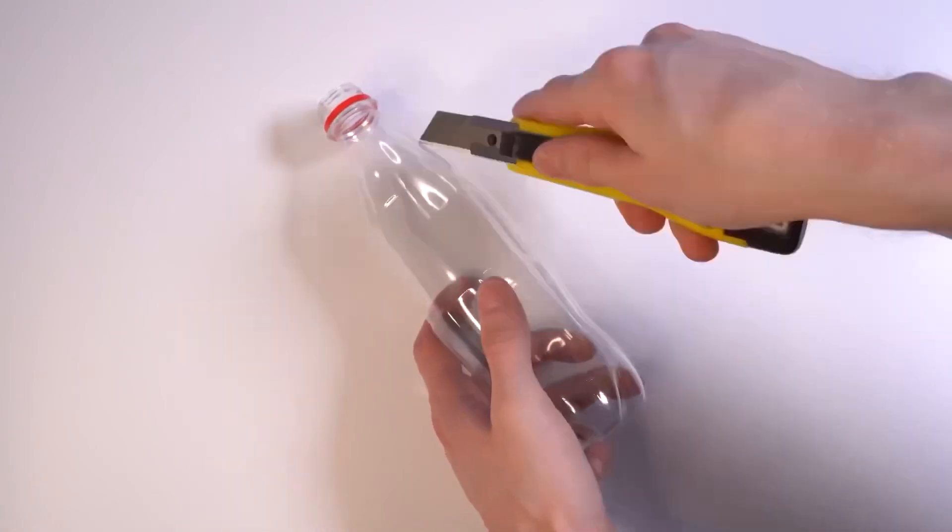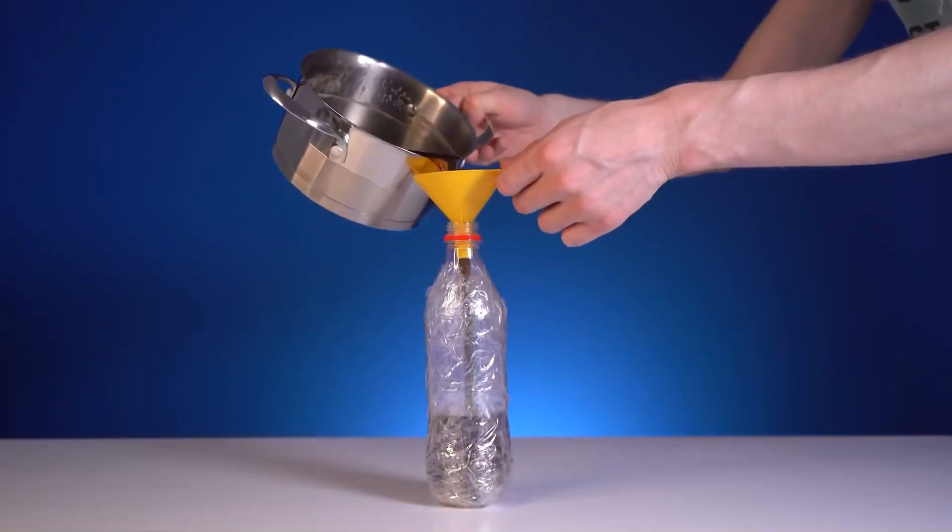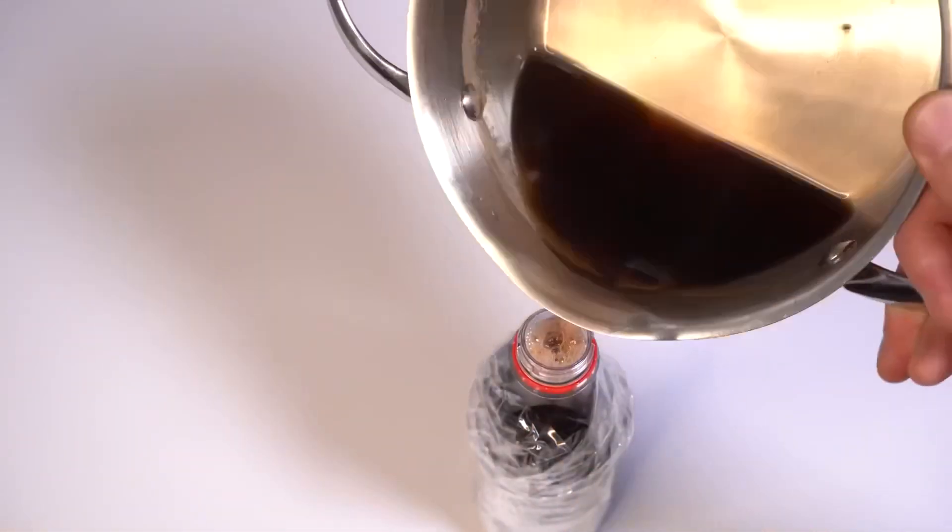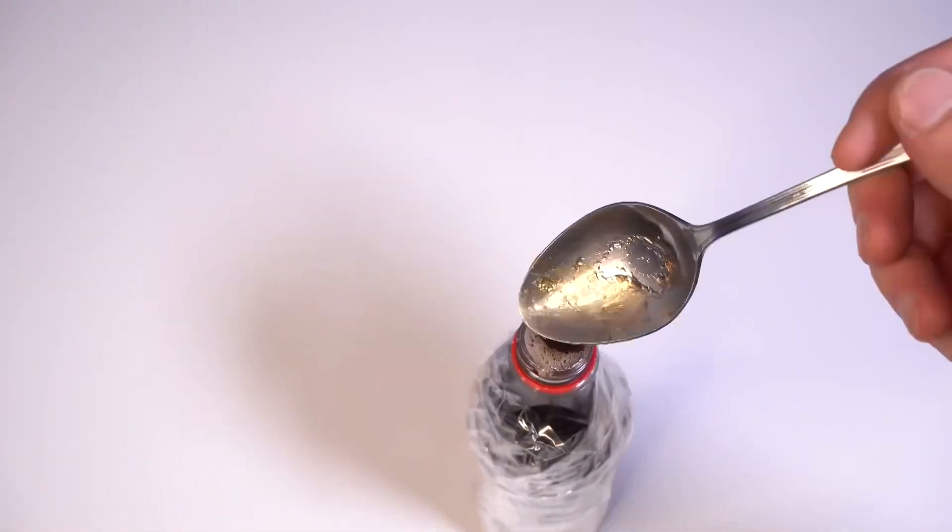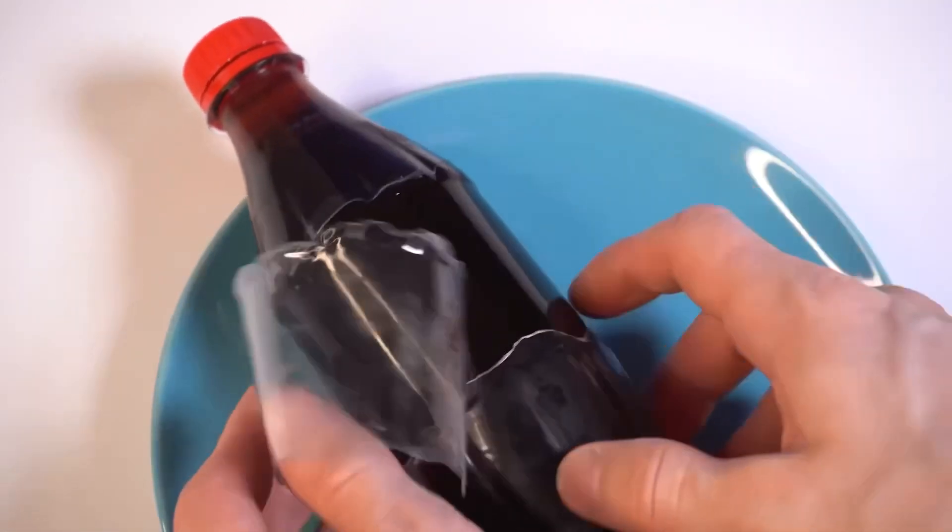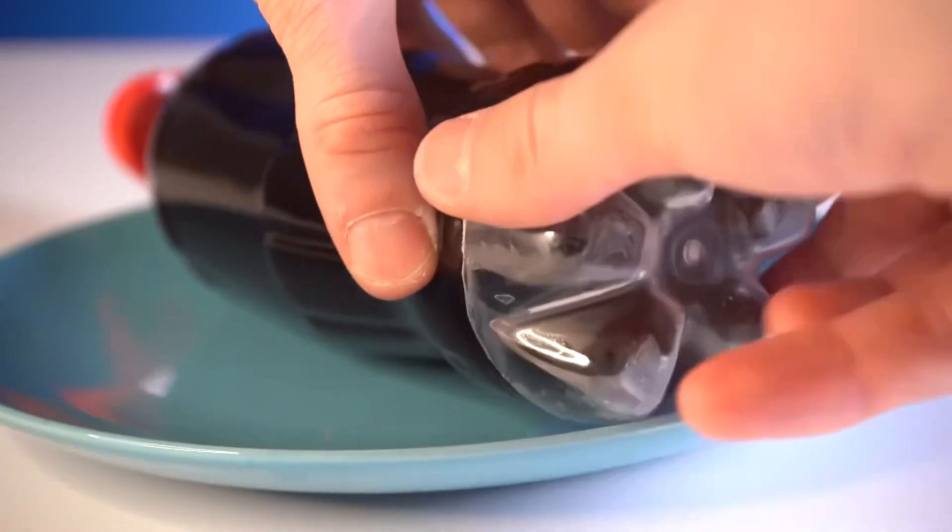At this time, we'll cut the bottle and wrap it with tape. Now, pour our mixture inside the bottle, fill it to the brim, and remove the foam. We'll put it in the freezer for 24 hours.